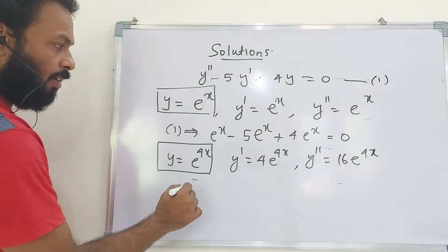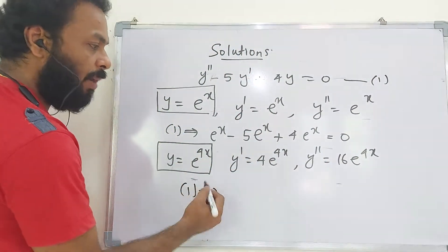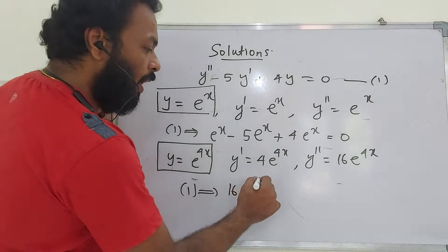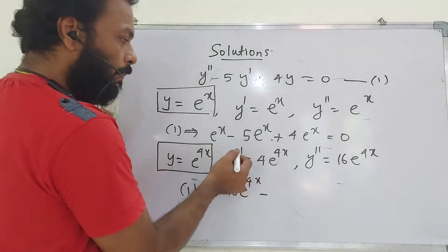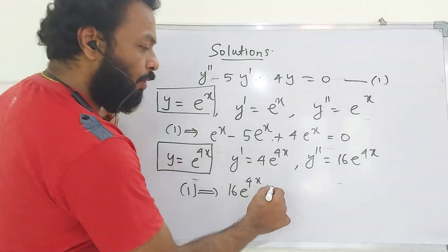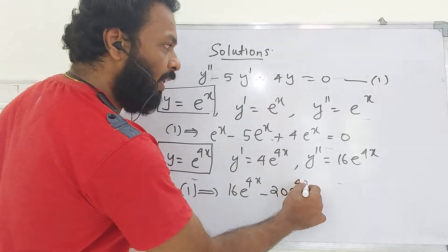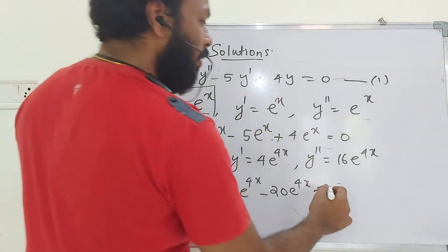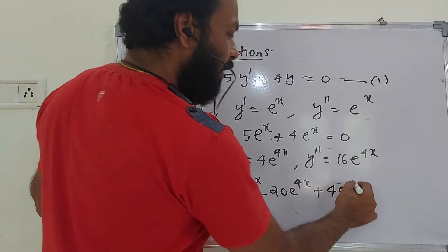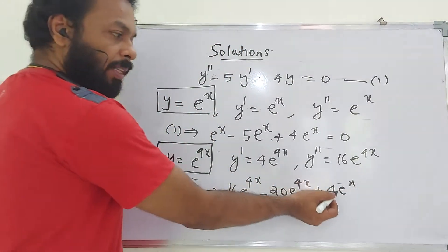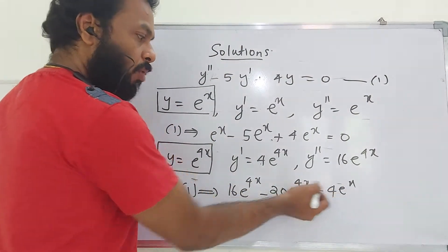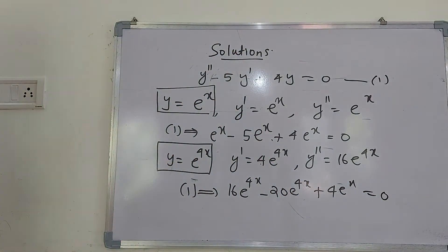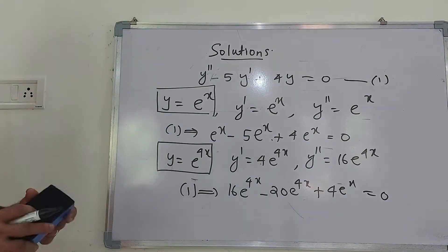Substituting these values into equation 1: 16e^(4x) - 5·4e^(4x) + 4e^(4x) = 16e^(4x) - 20e^(4x) + 4e^(4x) = 20e^(4x) - 20e^(4x) = 0. So e^(4x) is also a solution of the given differential equation.